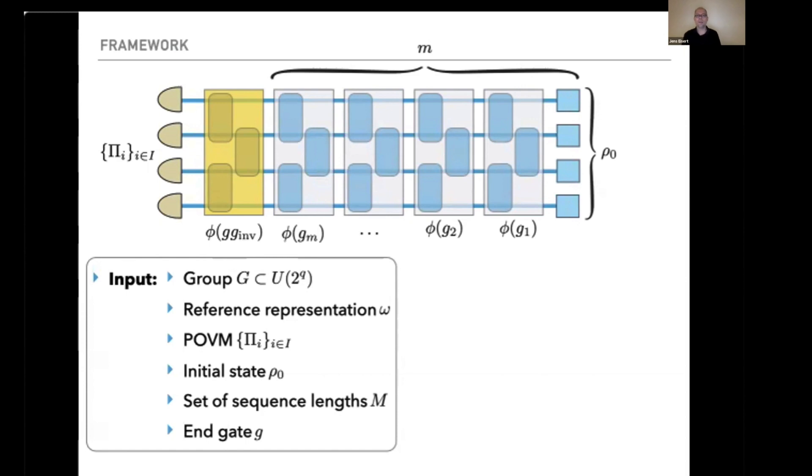A reference representation, and in most cases this is just the standard circuit representation on density matrices, the thing the quantum computer should be doing. You specify a POVM capturing the final measurement at the end of the sequence, an initial quantum state that you prepare and feed in, a set of sequence lengths, and an end gate that's implemented after the global inverse of the whole procedure. Most of the time this end gate is nothing but the identity, but doesn't have to be interestingly.